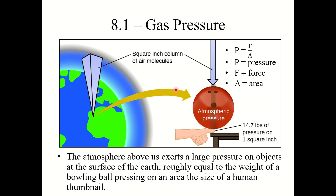We don't really think about this because we're used to it and we evolved in this environment, but right now there is pressure roughly equal to the weight of a bowling ball pressing on an area the size of your thumbnail. That amount of pressure is on you right now — about 14.7 pounds per square inch, which is about what one atmosphere of pressure equals.